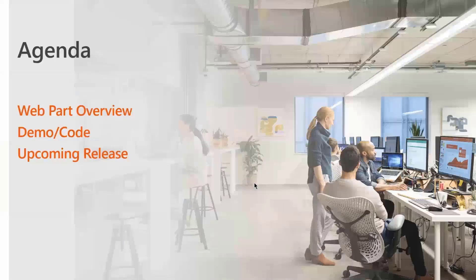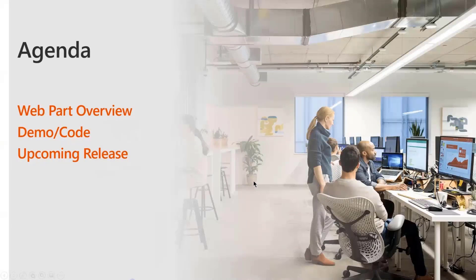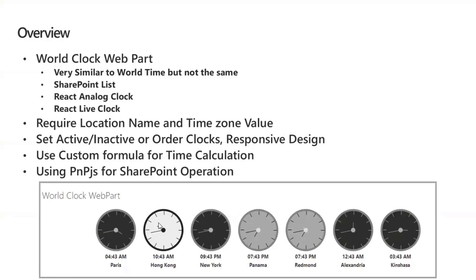In the next 15 minutes or so, we'll be looking at the overview of the web part and then the demo and the code — it will be quick. Behind the scenes for storage of the clocks, we use a SharePoint list. The SharePoint list is a very basic list with the title of the location and the GMT value, which is the positive or negative GMT or UTC time.